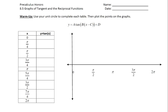This is the warm-up to introduce the graphs of tangent, cotangent, secant, and cosecant. The way we're going to approach that is to make a table and fill in the table much like we did for sine and cosine at the very beginning of graphing those.